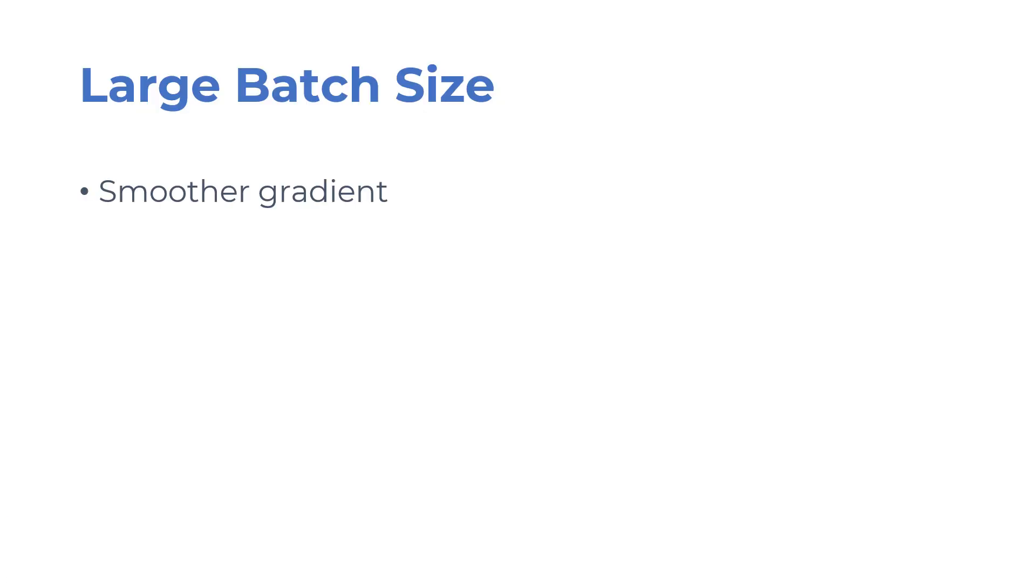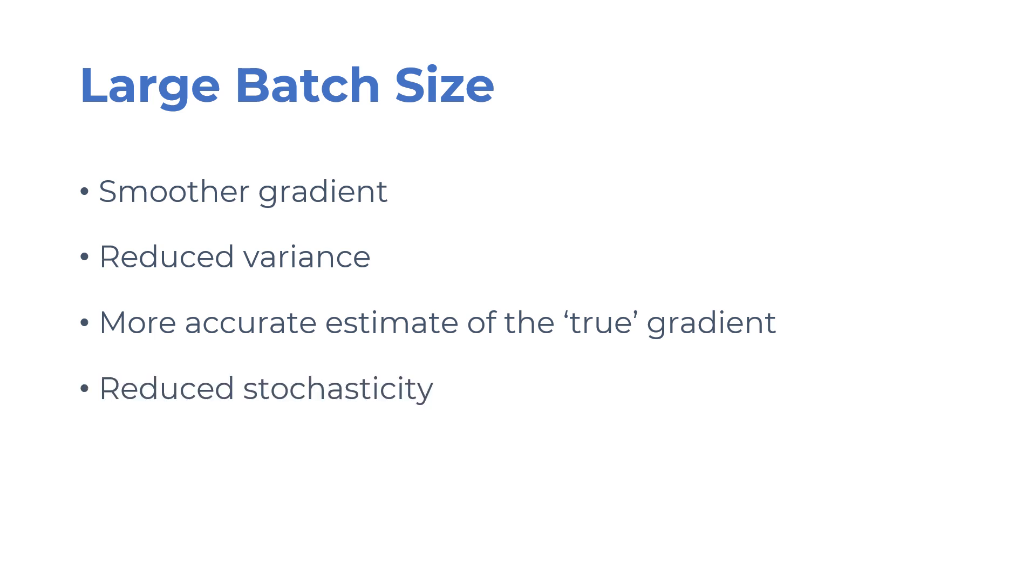Large batches result in smoother gradients because a large batch size reduces the variance in the gradient. Although this gives a more accurate estimate of the true gradient, a large batch size also reduces the stochasticity of the optimization. Empirically, models trained with very large batch sizes get worse validation accuracies as compared to the ones trained with smaller batch sizes given the same number of epochs.